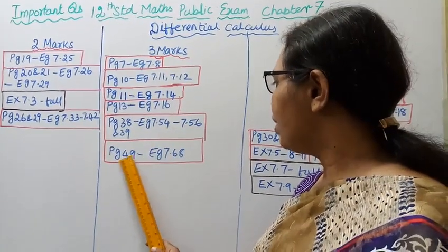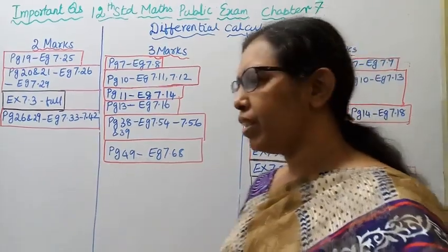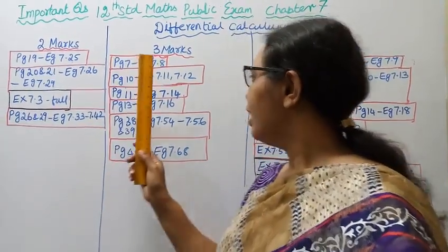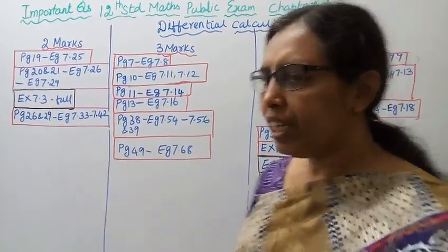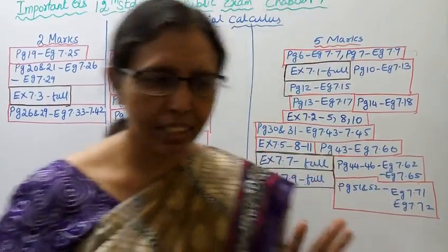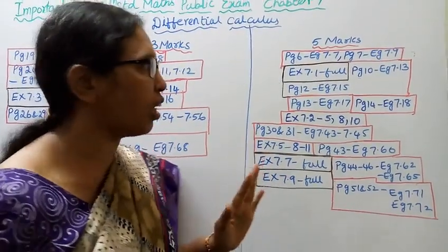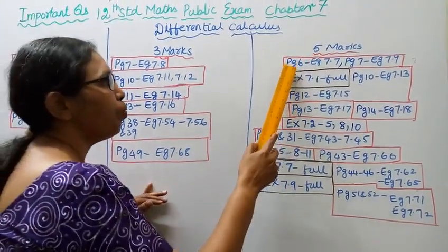Page 49: example 7.68. These are all the important examples for 3 marks. After practicing these examples, exercise sums will also become easier.